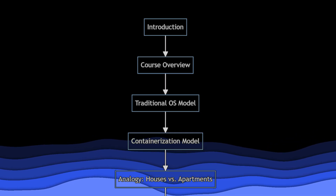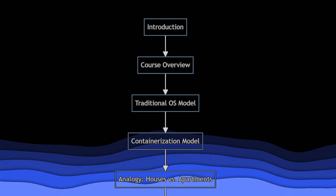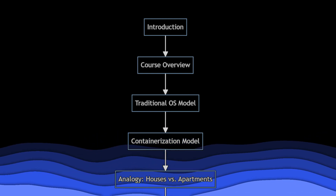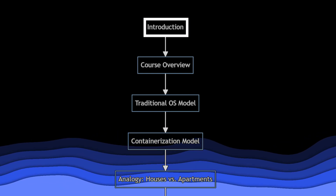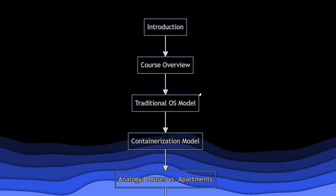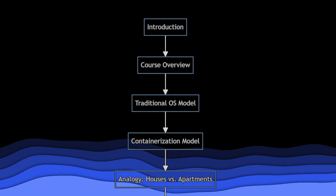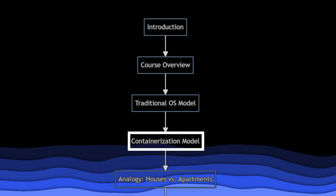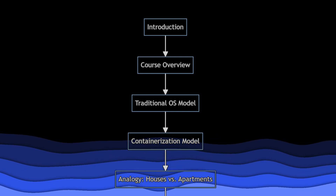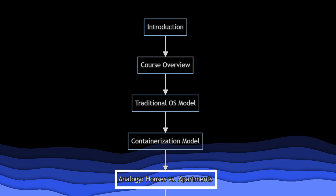Welcome to the course overview for our journey into managing containerized applications with Podman. In this section, we'll outline the key stages of our course. First, we start with the introduction, where we set the stage for what you'll learn. Next, we move to the traditional OS model, explaining how applications run on physical or virtual machines. Following that, we explore the containerization model, showcasing how containers offer a more efficient approach. To make this clear, we'll use an analogy comparing houses and apartments to illustrate the differences between virtual machines and containers.